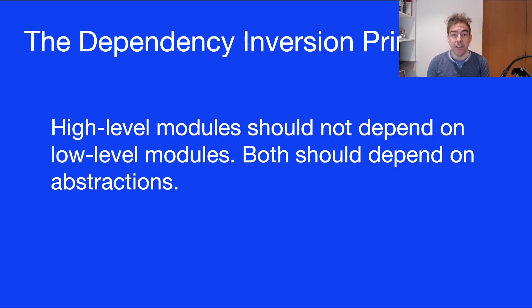So the dependency inversion principle has kind of two parts to it. High level modules should not depend on low level modules but should depend on abstractions. And also abstraction should not depend on details. Details depend on abstractions.